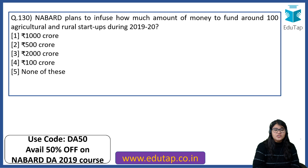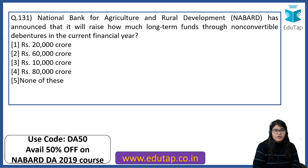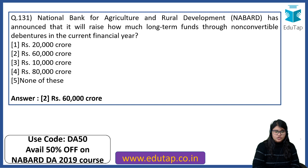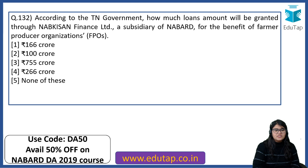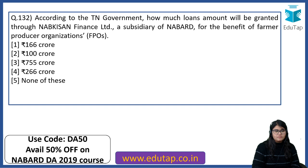NABARD plans to infuse 1,000 crore to fund around 100 agricultural and rural startups during 2019-20. NABARD announced it will raise Rs. 60,000 crore in long-term funds through non-convertible debentures in the current financial year. According to the Tamil Nadu government, Rs. 266 crore in loans will be granted through NABARD Kisan Finance Limited, a subsidiary of NABARD, for the benefit of farmer producer organizations.